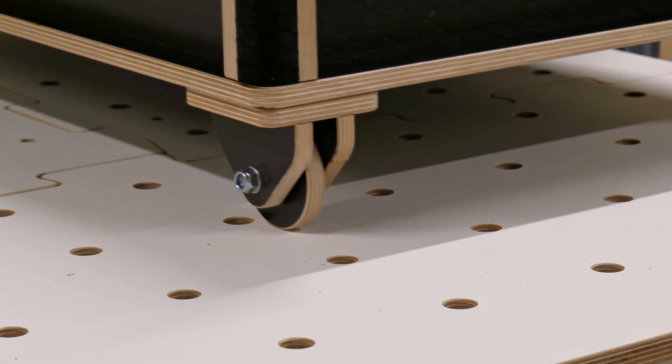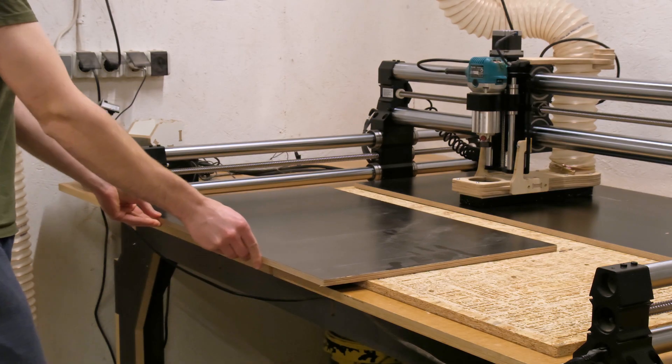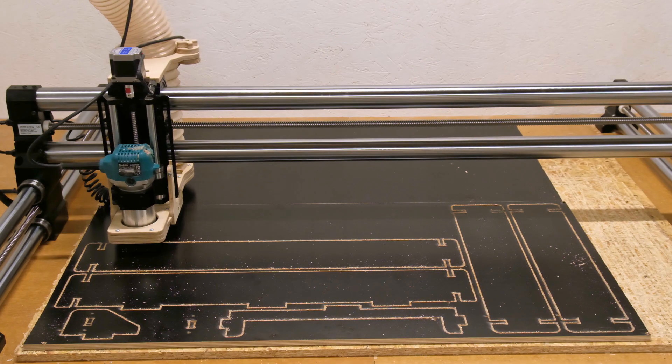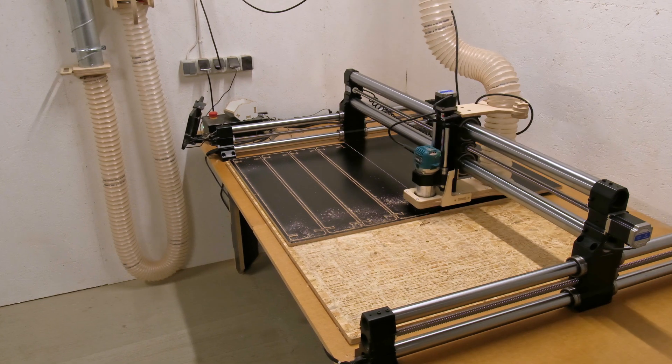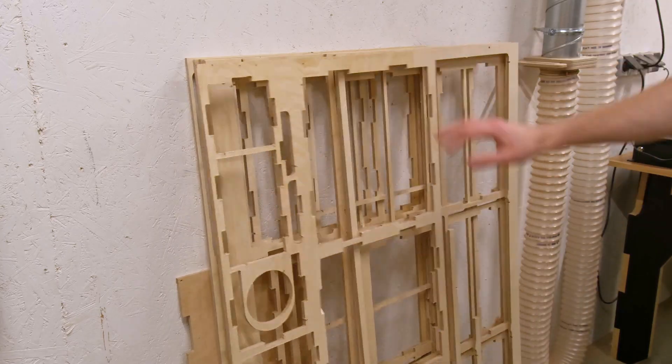Now that we got the base for the offcut tower ready, it is time to make more wall parts. So I am loading another sheet on the CNC router and starting the next operation.